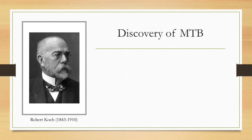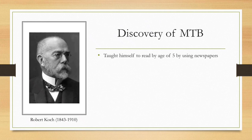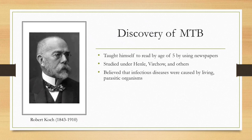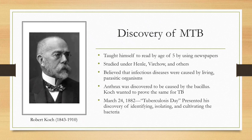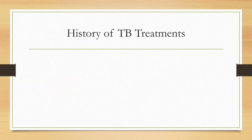The discovery of TB was by Robert Koch, who taught himself to read at the age of five. He was very smart and driven, having studied under Henle, Virchow, and others. He believed that infectious diseases were caused by living parasitic organisms. At the time, anthrax was discovered to be caused by a bacillus bacteria, and he wanted to prove the same for tuberculosis. On March 24th, 1882 — World Tuberculosis Day — he presented his discovery of identifying, isolating, and cultivating the bacteria.